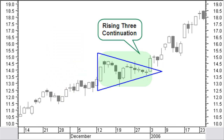You have a rising 3 continuation pattern in an uptrend with a big white candle that is followed by a number of small, mostly black bodies. The pattern ends with another big white candle with a new high price. This will look many times as a western pennant continuation pattern inclusive the break to the upper side.